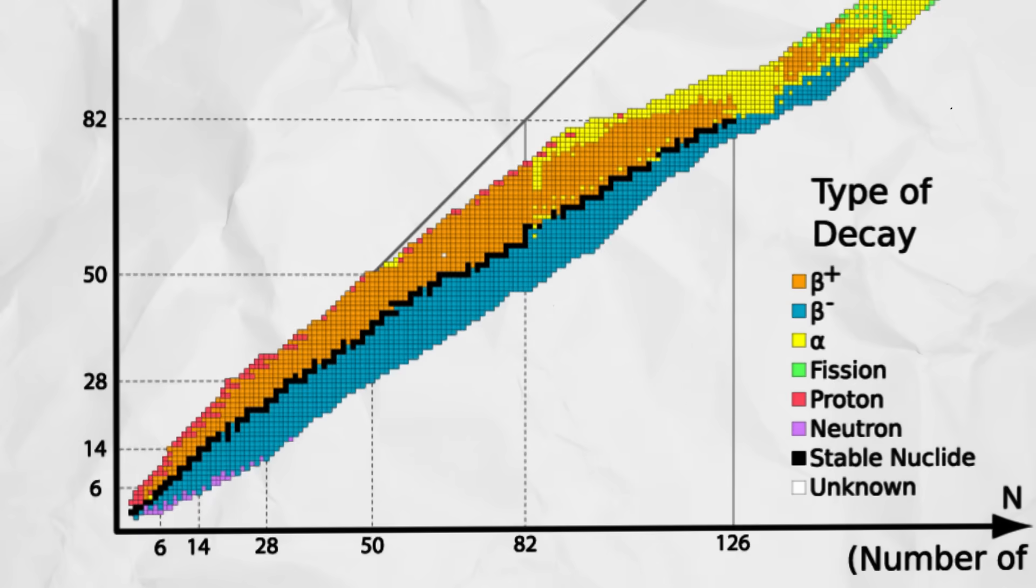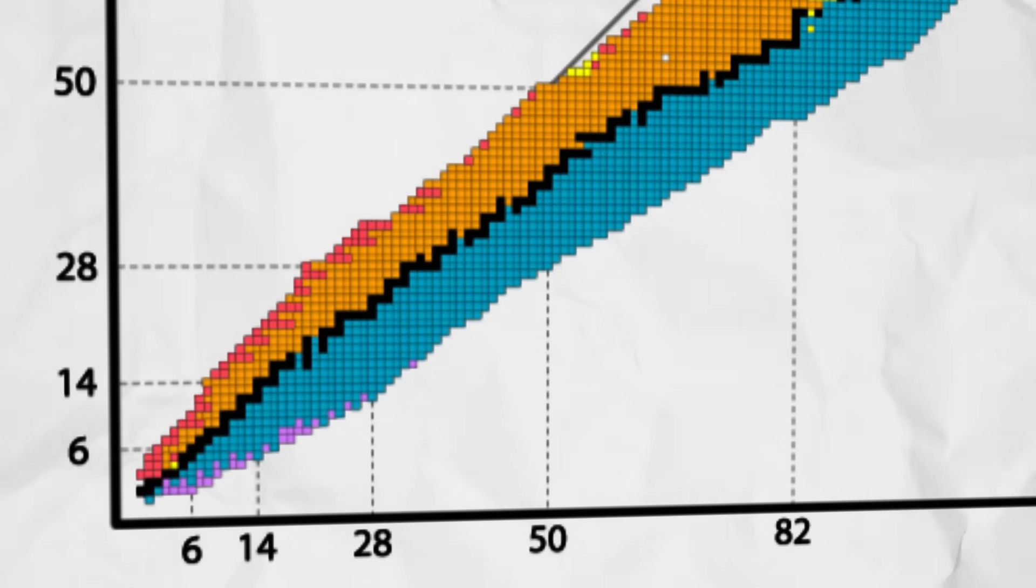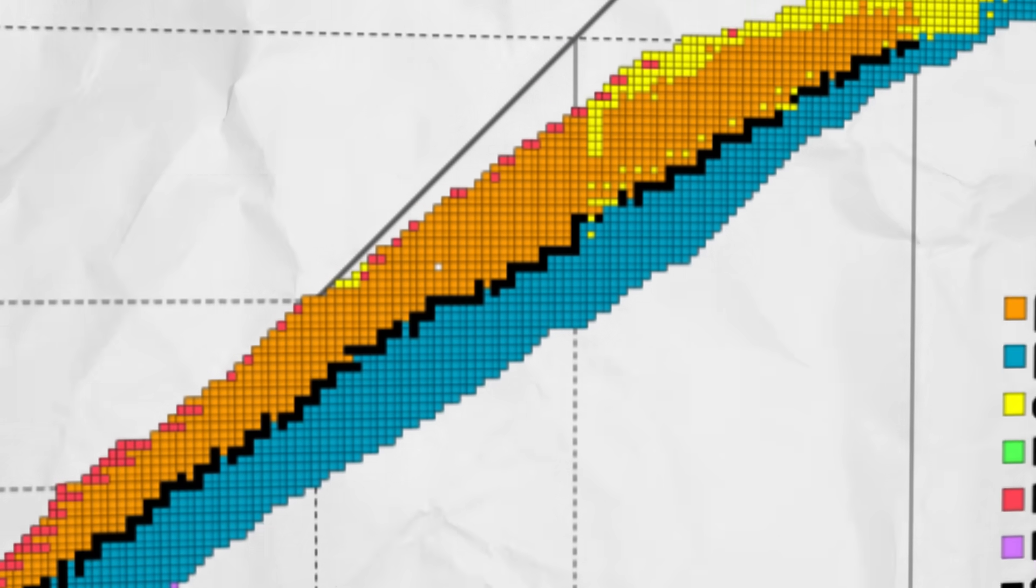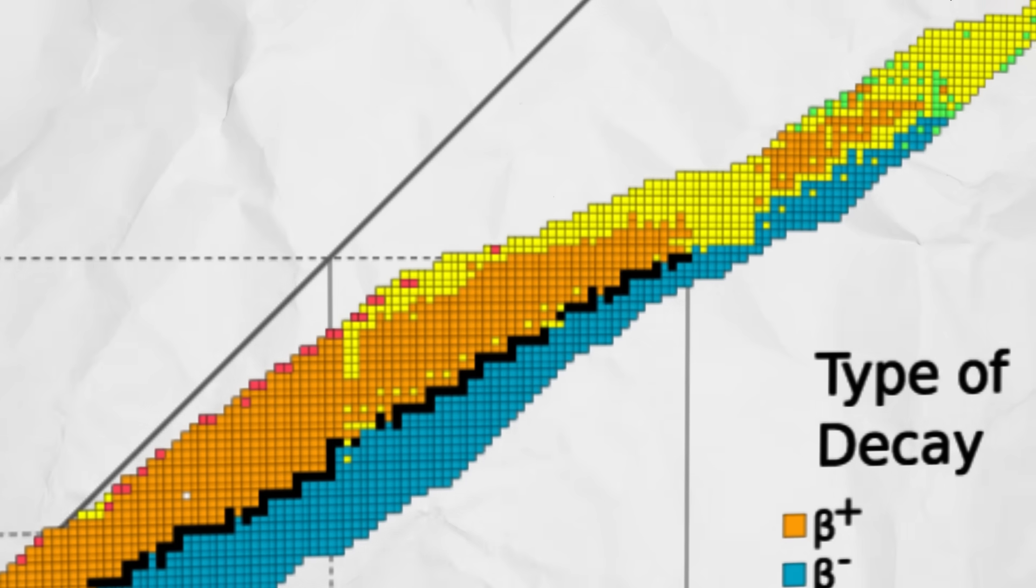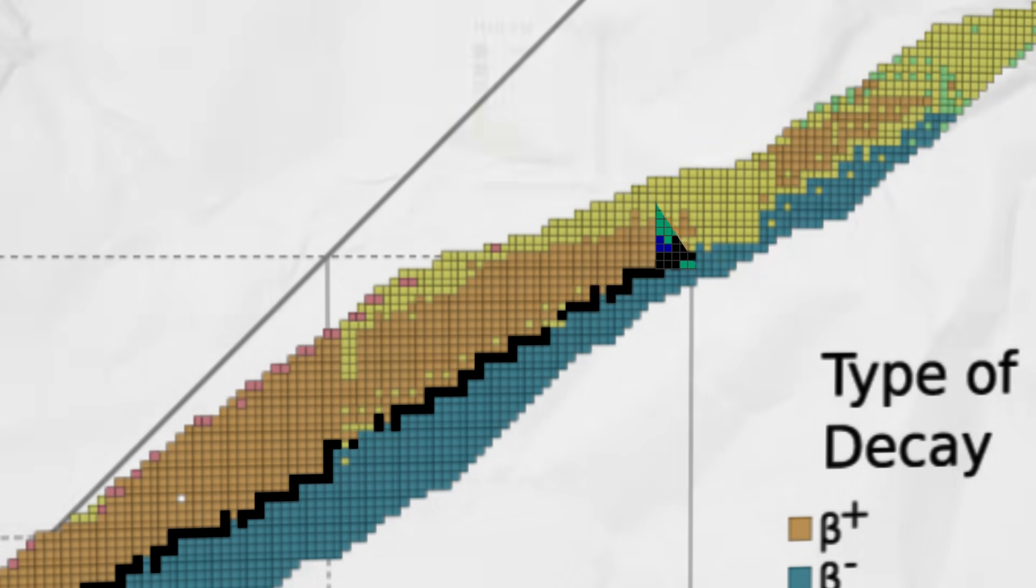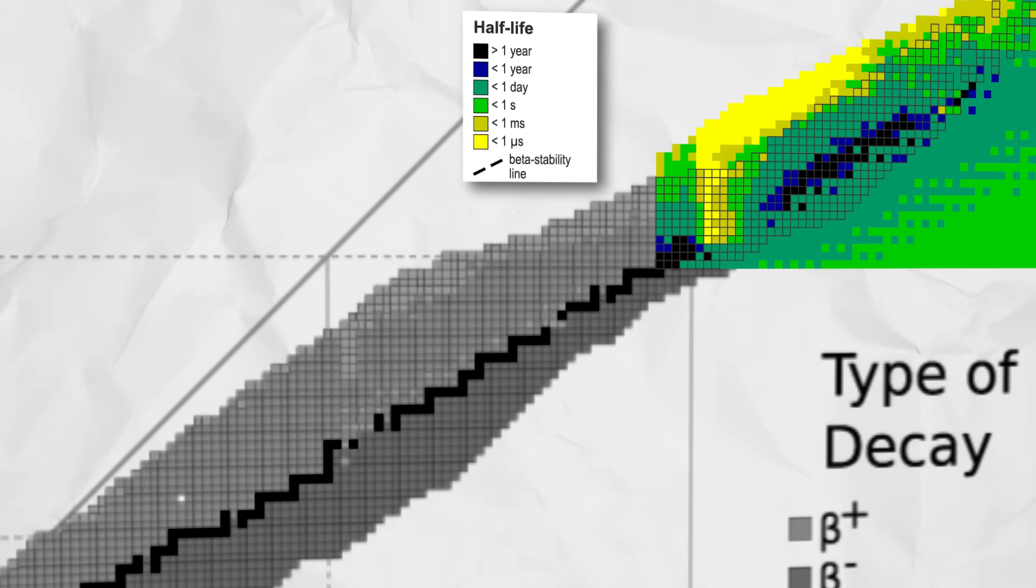To understand why, let's take a look at the predicted half-lives of isotopes with more than 82 protons. If we quickly draw an extension of the valley of stability, we see that these elements are radioactive but have quite long half-lives. But the further we move from this line, the less and less stable these isotopes become, with shorter and shorter half-lives.